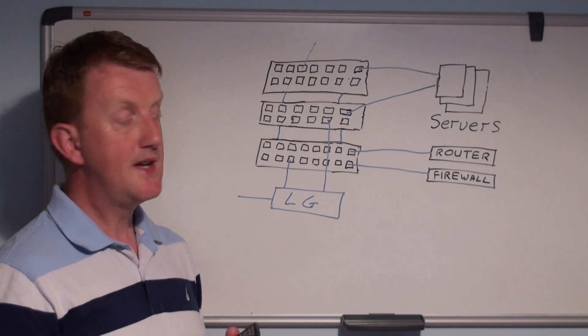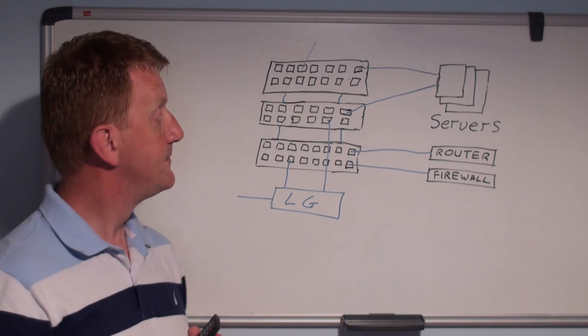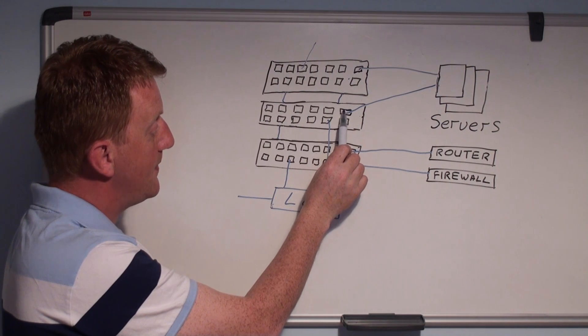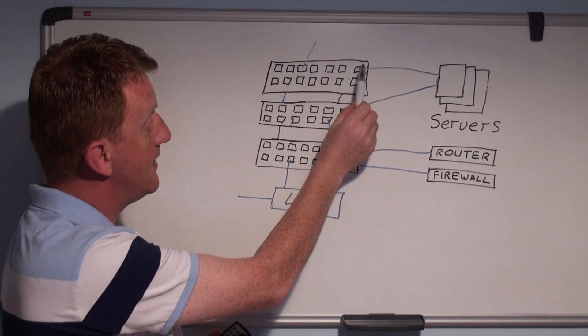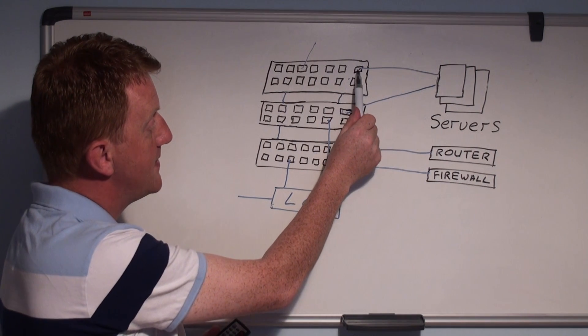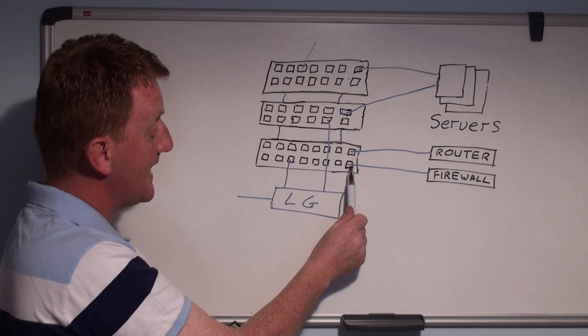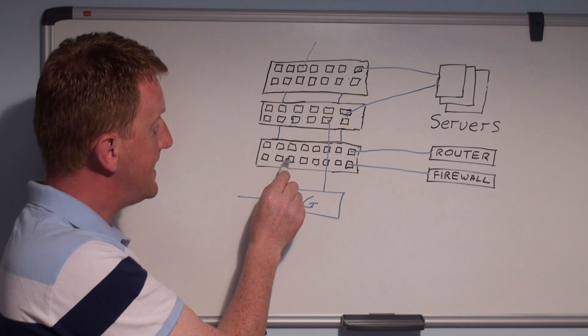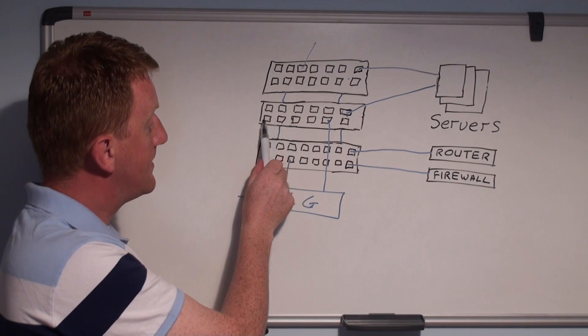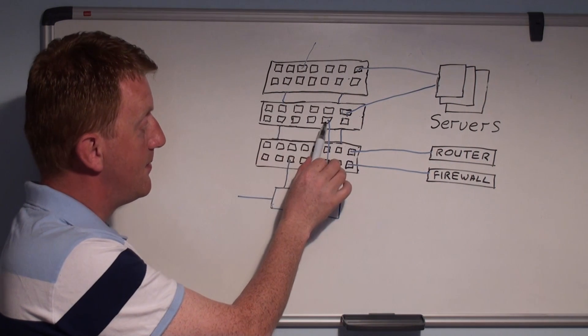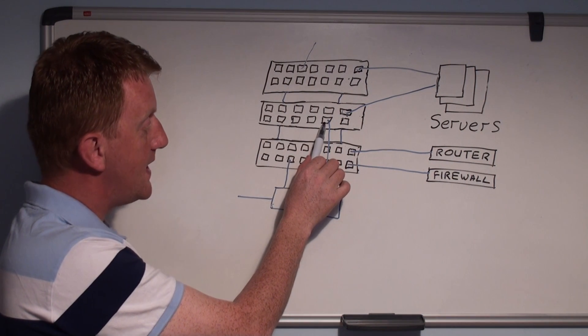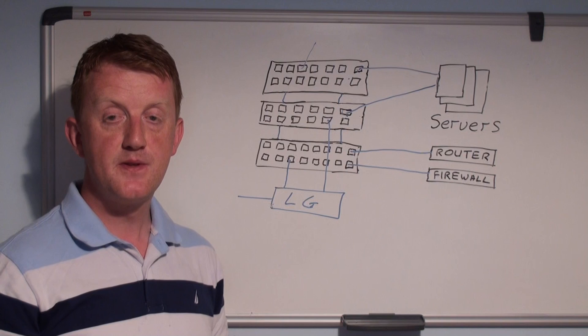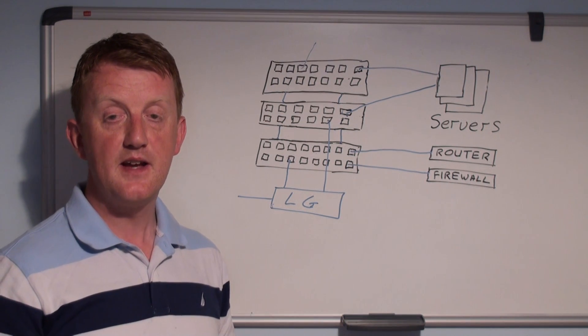Some switches have a web front end where you just set up what ports are the source and what's the destination. The source is always the ports that the servers are connected to. So in this case these ports connected to my servers would be a source. The monitoring port or destination will be where the sensors plug in. When we set up the mirroring on the switch, we set up the source as the server ports and the destination as the LanGuardian sensor port.